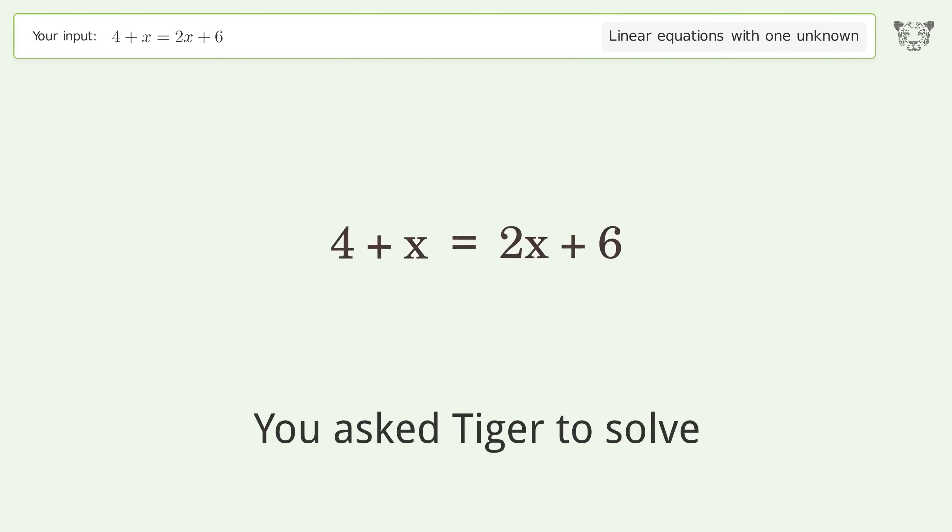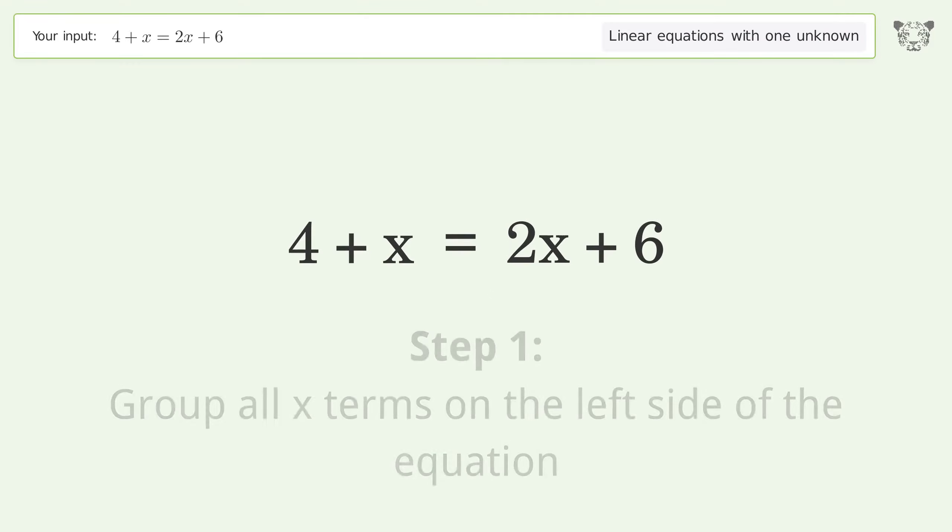You ask Tiger to solve this. This deals with linear equations with one unknown. The final result is x equals negative 2. Let's solve it step by step. Group all x terms on the left side of the equation.